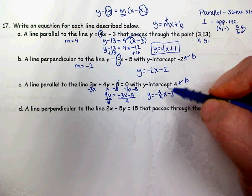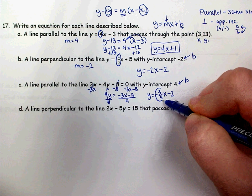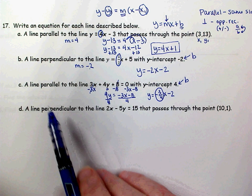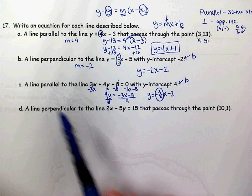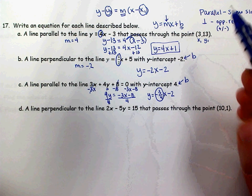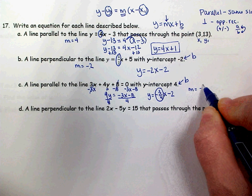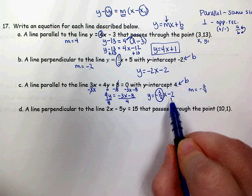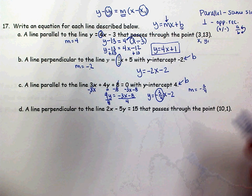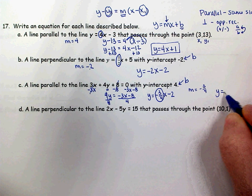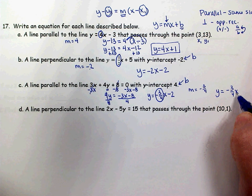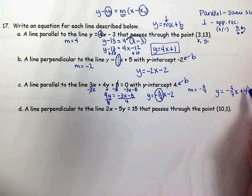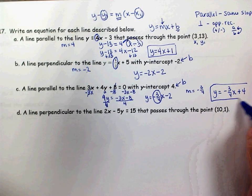My slope is negative 3-fourths. I want to write an equation parallel to it, so I also want a slope of negative 3-fourths. But I want my y-intercept to be 4, not negative 2. So my equation is y equals negative 3-fourths x plus 4. That's my answer to part C.